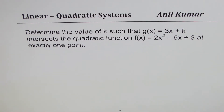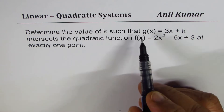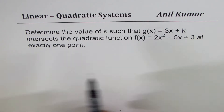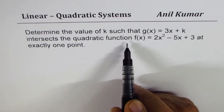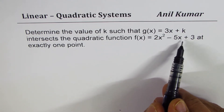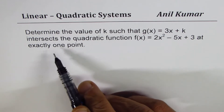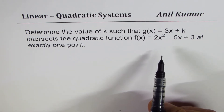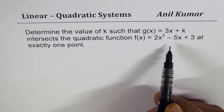I'm Anil Kumar and here is a very good question based on linear quadratic systems. The question is: determine the value of k such that g(x) = 3x + k intersects the quadratic function f(x) = 2x² - 5x + 3 at exactly one point.